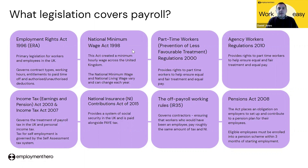The first one is the Employment Rights Act 1996. This is the primary legislation for workers in the UK. It governs the types of contracts, working hours, entitlement to be paid, and part-time workers. It also governs authorised and unauthorised deductions and the protection of employees against having unauthorised deductions made from their wages. It also covers late payment of wages, so it really covers the framework of contracts within employees' rights.